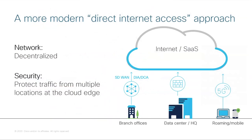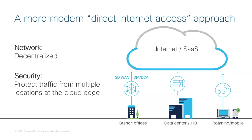The more modern approach is to look at direct internet access. If the majority of your traffic needs to go from that branch directly to the internet — whether it be applications in infrastructure as a service, SaaS apps like Office 365 or Salesforce, or even just cloud storage like Box or Dropbox — if that's where the majority of your traffic is going and a lot of the performance-sensitive traffic, then you want to go direct. That's just more efficient. The same applies from the data center or headquarters, and for roaming or remote users, where there's been a great increase over the last few months. They want to go direct to the internet too.